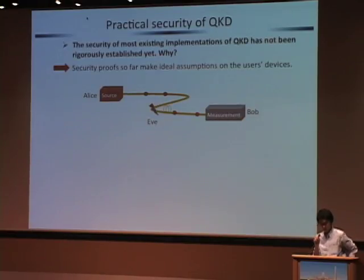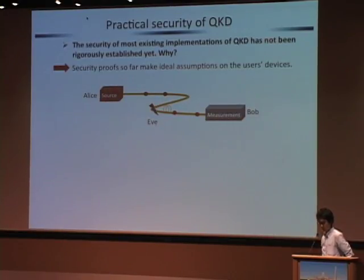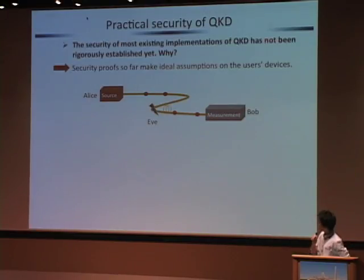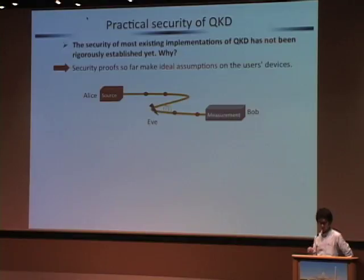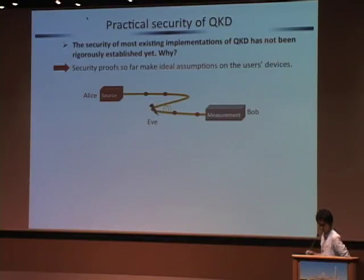Why? The reason is that the security proofs so far make ideal assumptions on the user's devices — Alice's source device and Bob's measurement unit. But these ideal assumptions are hardly satisfied if there exist imperfections in the devices or even potential side-channel attacks.